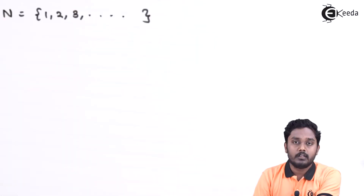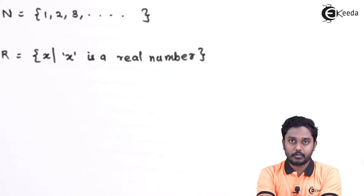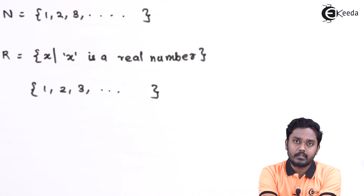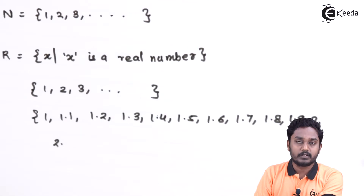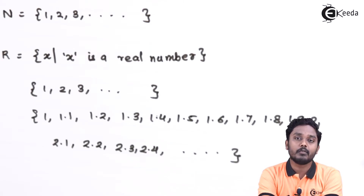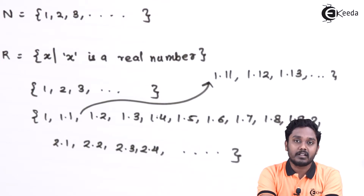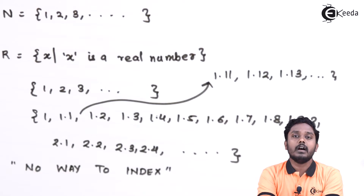Let us write down the sets first. This is the set containing natural numbers. For real numbers, let us try to give them positions. Real numbers contain all the natural numbers within them. Between 1 and 2, do we have other numbers? Yes — let us write them down: 1.1, 1.2, 1.3, and so on. Similarly, between 2 and 3 we have various other numbers. But between 1.1 and 1.2, do we have still more numbers? Yes — we have 1.11, 1.12, 1.13, and so on. In fact, given any two real numbers, between them I can write infinitely many real numbers. And hence there is no way to enumerate real numbers; there is no order in which you can list them one after another. You cannot index them. These types of sets are called uncountably infinite sets.